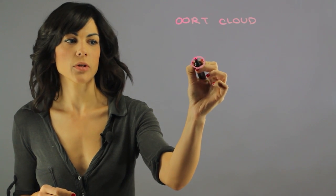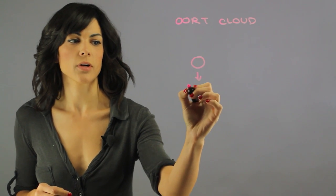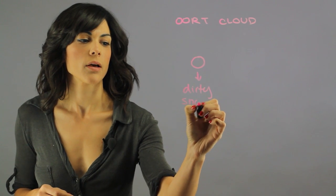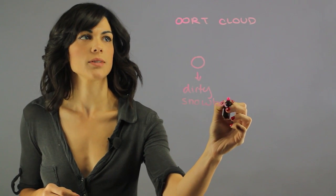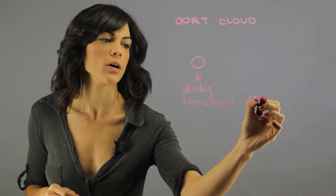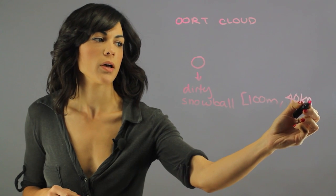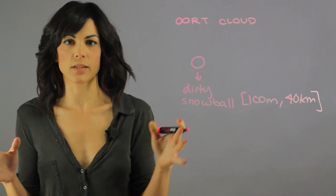The main part of a comet is the nucleus, commonly referred to as a dirty snowball. It ranges in size from about 100 meters to about 40 kilometers, so it can change very drastically in size.